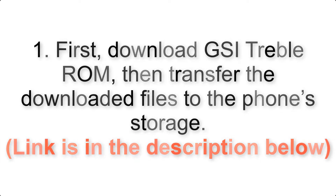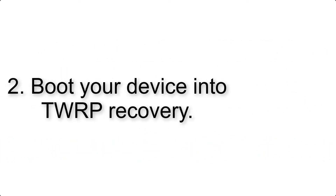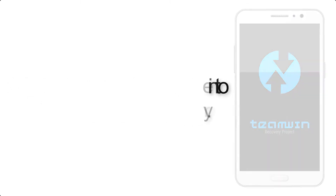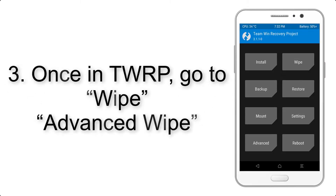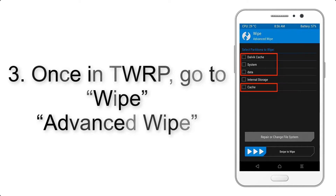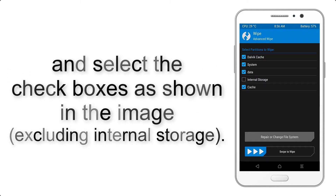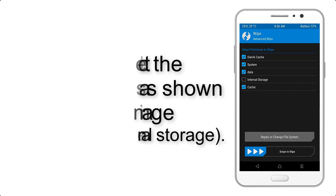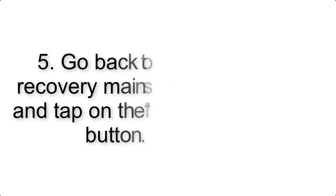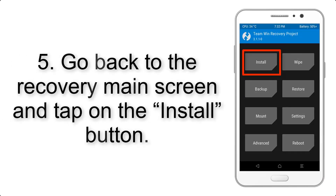Step 2: Boot your device into TWRP recovery. Once in TWRP, click on Wipe, then Advanced Wipe, and select the checkboxes as shown in the image, excluding internal storage. Step 4: Swipe the button to wipe the device.